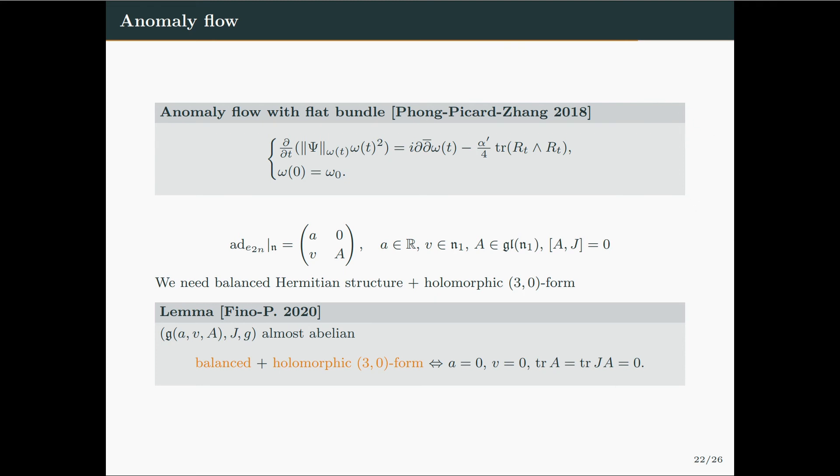So here I have just written again the equation of the anomaly flow. Analogously to what we have proved for balanced structure, we proved that a Hermitian structure on an almost abelian Lie algebra is balanced, with complex structure admitting holomorphic 3-0 forms, if and only if a vanishes, v vanishes, and both A and JA are traceless.